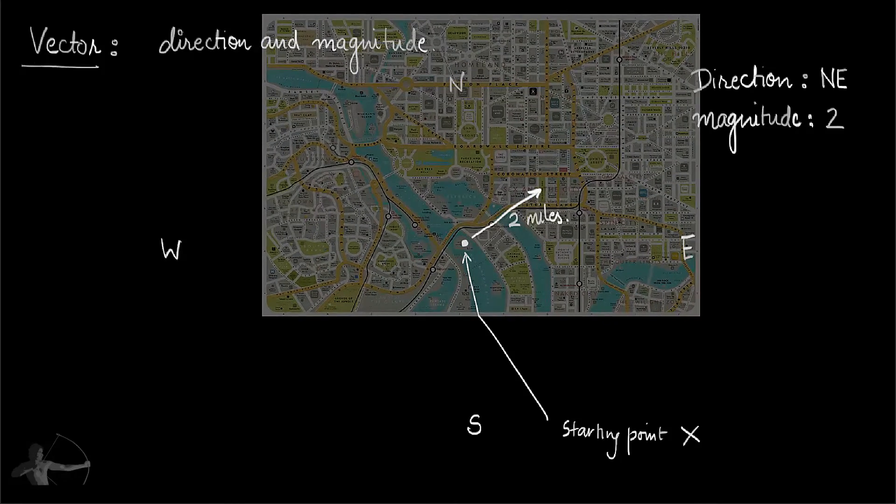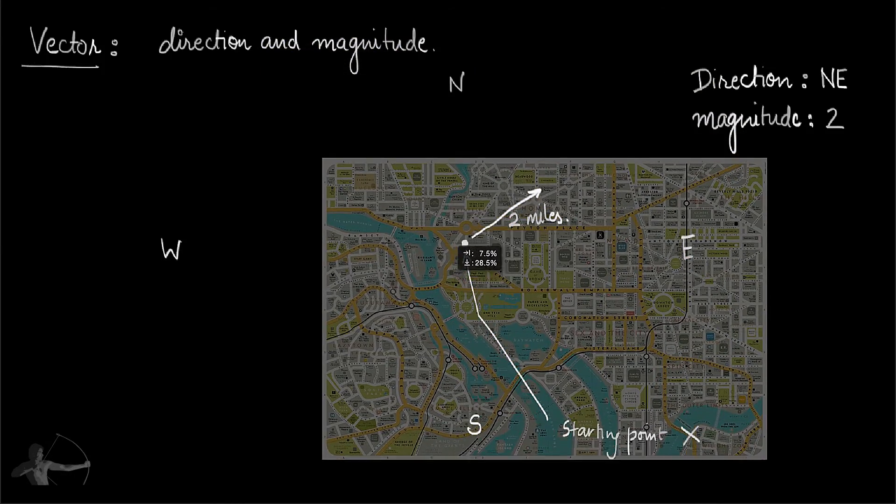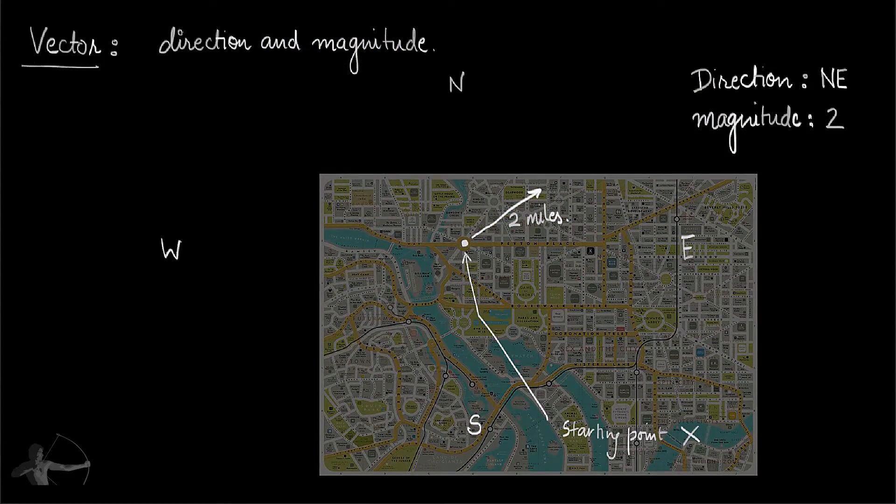You can be standing here on this island or you can be standing on the street. You just have a direction and the magnitude to travel. That is what a vector is.